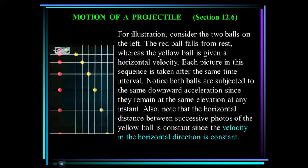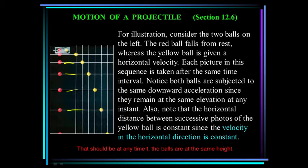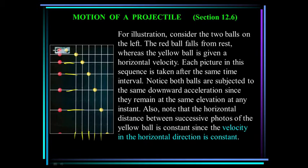Consider this experiment: the red ball was dropped with zero velocity, and at the same instant the yellow ball was dropped with an initial horizontal velocity. In the time sequence of the drop, at each elevation the balls are at the same height, meaning they're both experiencing the same downward acceleration. In the x direction, at every time t the yellow ball has traveled the same amount of distance, supporting our theory that horizontal velocity is constant.